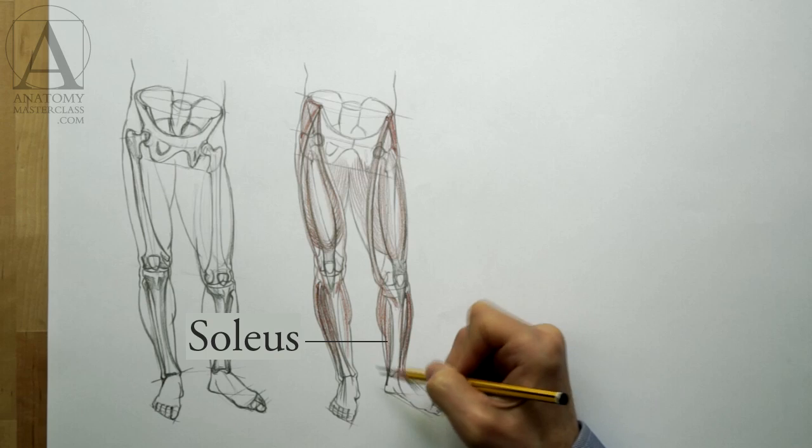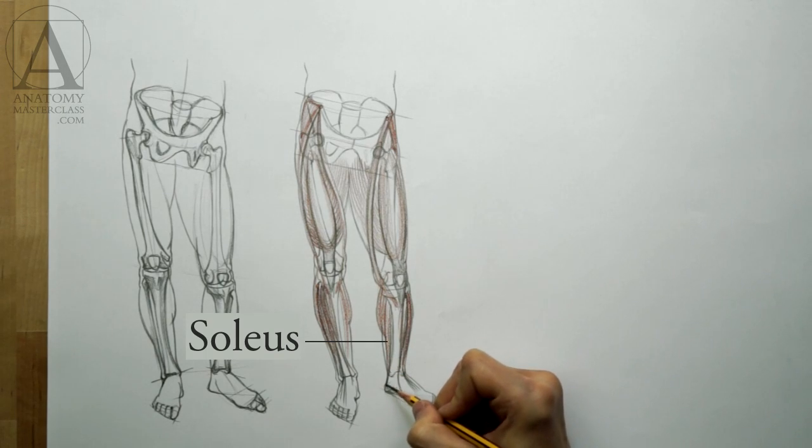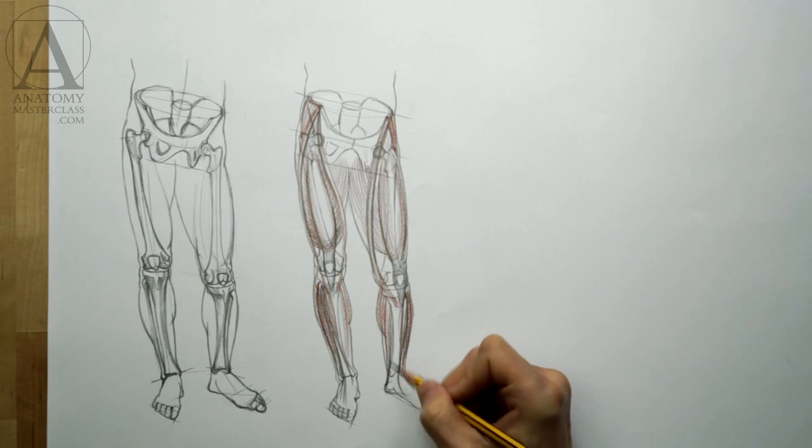Underneath the calf muscle, there is the soleus muscle, which helps flex the foot downward and stand on the tips of the toes.